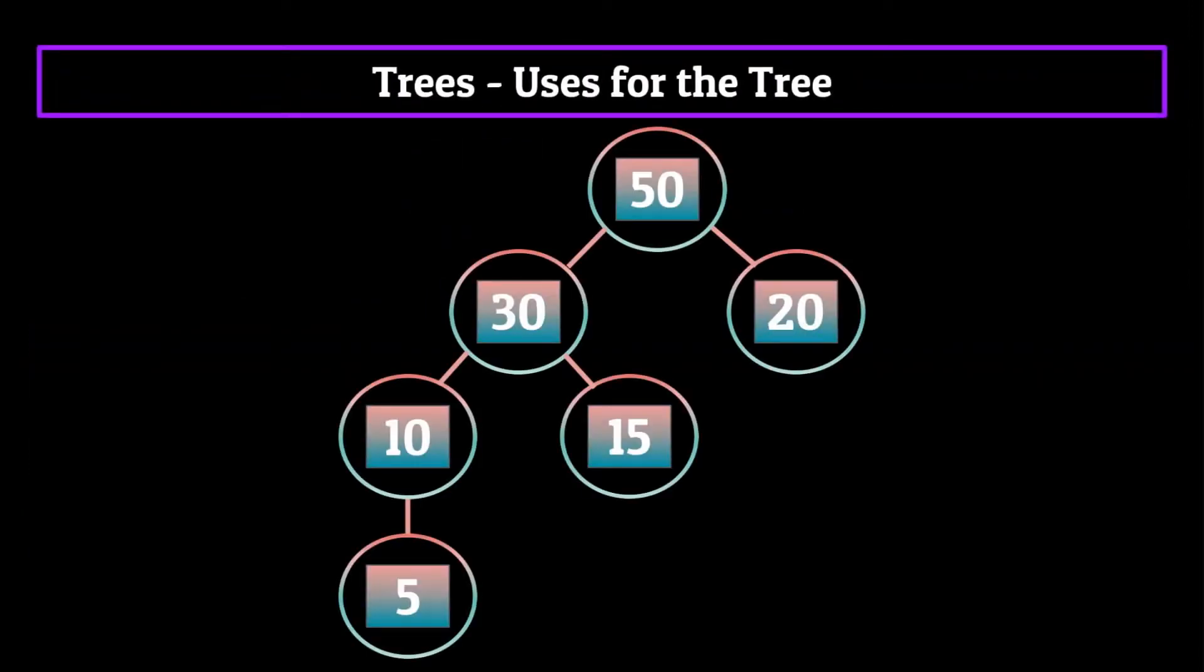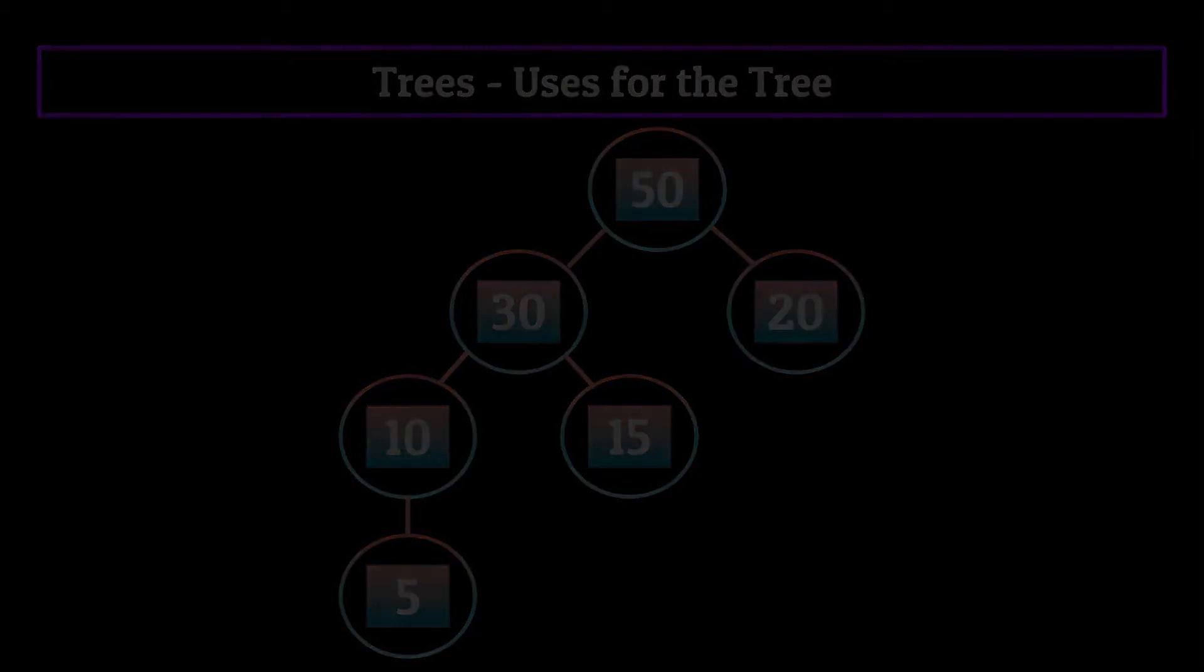Outside of representing data in general, when we put restrictions on trees, like in the case of the binary search tree, we can expand the use of the tree even further. At the beginning of the series, I said that some data structures might not look like heavy hitters, but they provide some special functionality which sets them apart. And the tree is a perfect example of that. Its base structure is incredibly useful, and it can be modified in so many ways which only add to its functionality. One of those ways is through what's known as a trie and is the next data structure on our agenda. So stay tuned for that.